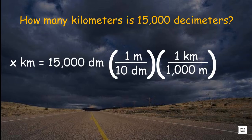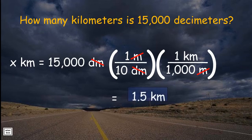This allows us to cancel the units of decimeter and then the meter, giving us our desired unit in kilometers. Now we are left with our desired unit, the kilometer. And to solve, we have 15,000 divided by 10 then divided by 1,000, which results to 1.5 kilometers.